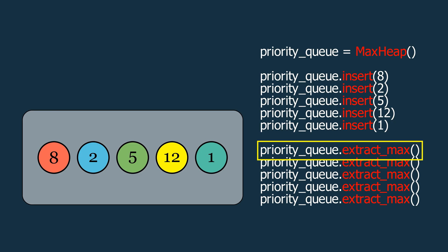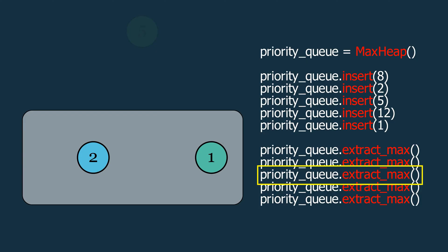When we remove elements, they'll be popped in order of their priority, with the highest priority element being removed first. This way, our max heap provides the ideal mechanism for efficiently managing and accessing the highest priority items in the queue.